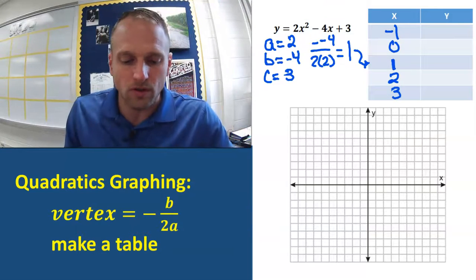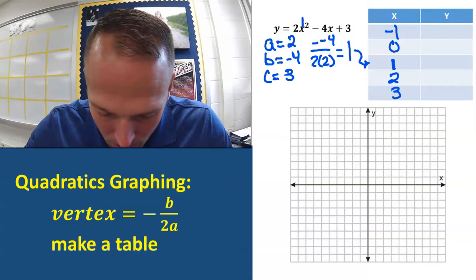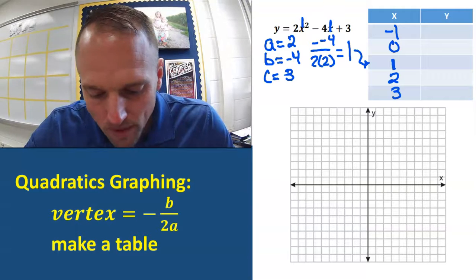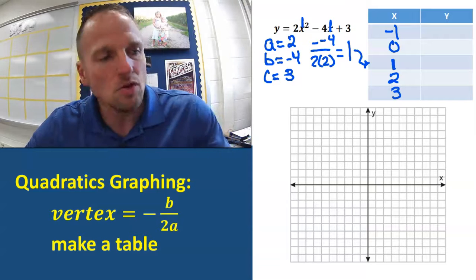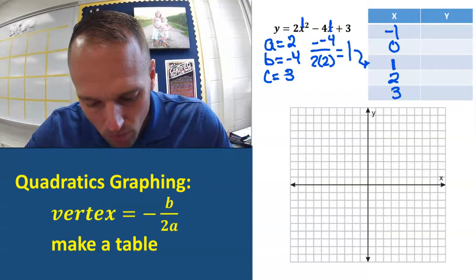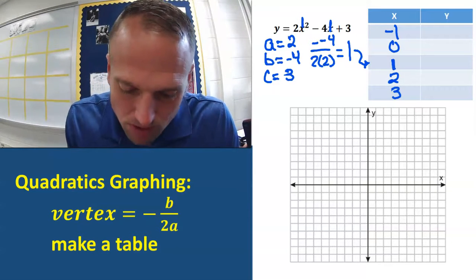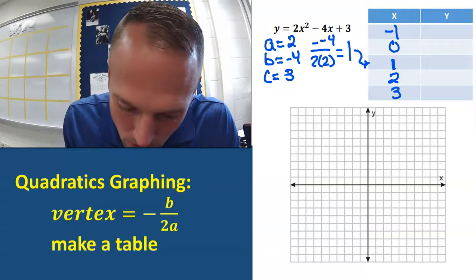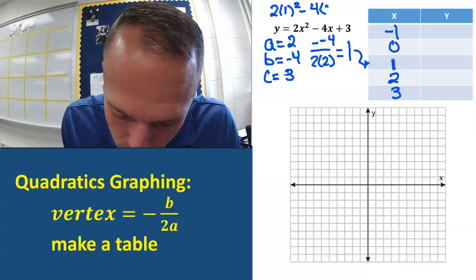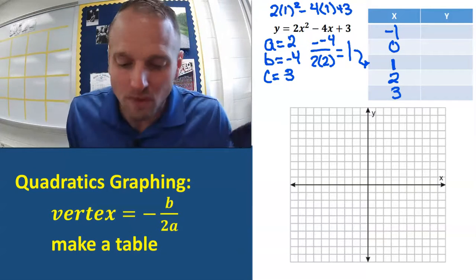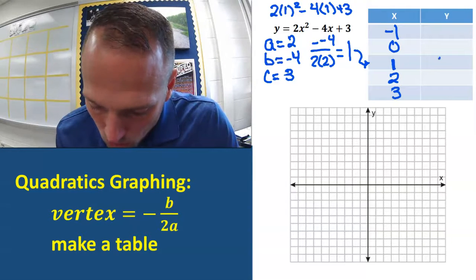Let's start with 1 — a nice easy number. If I put 1 in for x, that's going to be 2 minus 4 plus 3. You can use your calculator. If you're putting this in your calculator, enter it as: 2 times parenthesis 1 parenthesis squared minus 4 times parenthesis 1 parenthesis plus 3. Punch that in and it's going to give you the right answer. In this case, the right answer is 1.